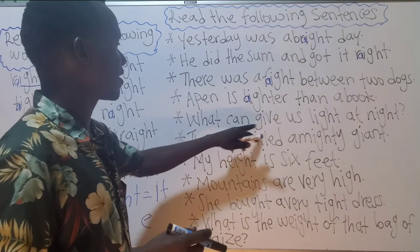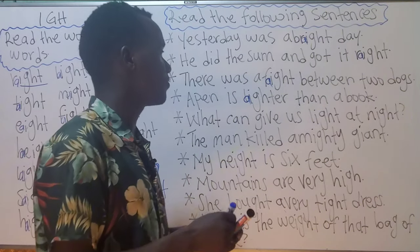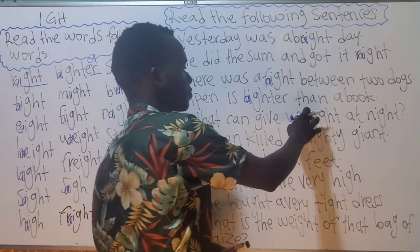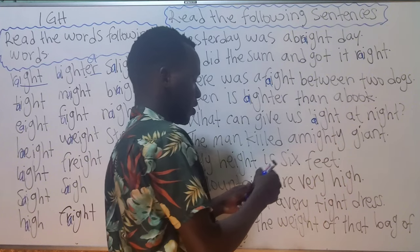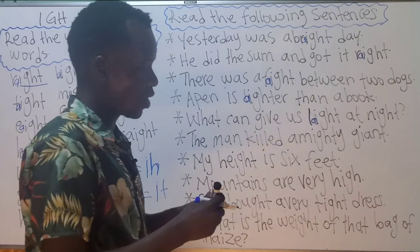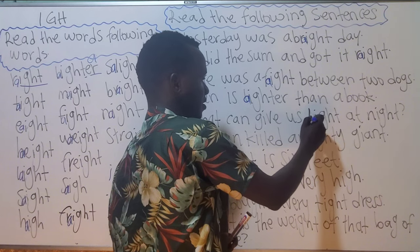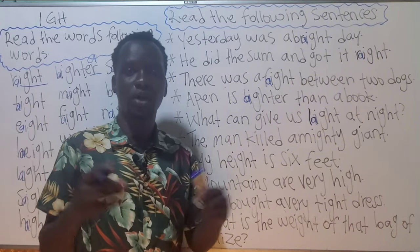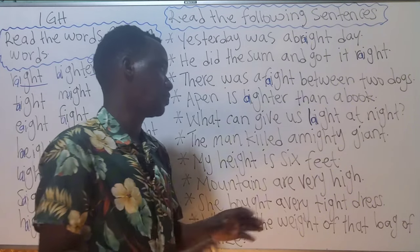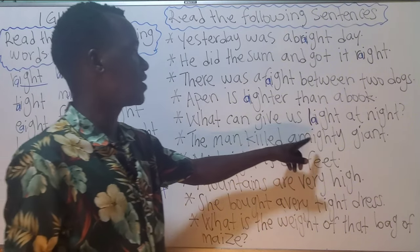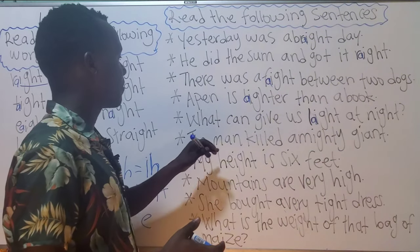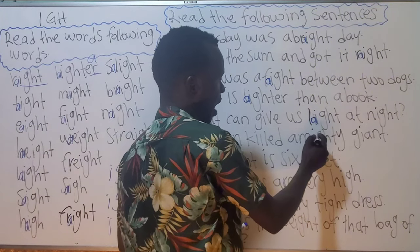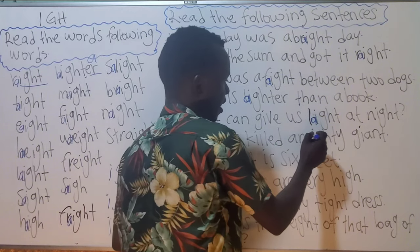Number five: 'What can give us light at night?' Invisible A is also here in 'light.' During the day we have sunshine giving us light, and at night we have the moon giving us light. Number six: 'The man killed a mighty giant' — invisible A in 'mighty.'